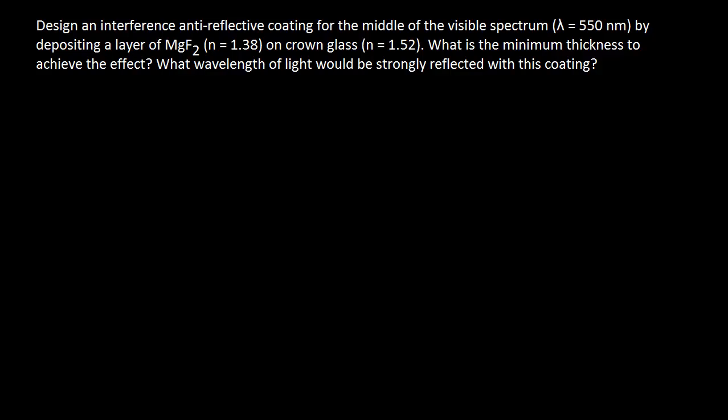by depositing a layer of MgF2, which has n = 1.38, on crown glass, which has n = 1.52. And we're asking what is the thickness we need to achieve the anti-reflective effect.